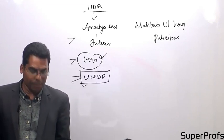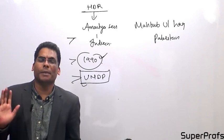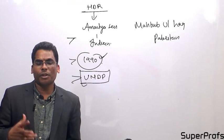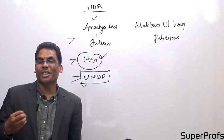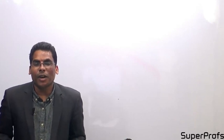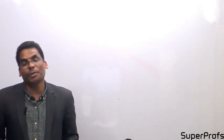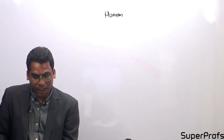The Human Development Report is launched by UNDP — United Nations Development Programme. The importance of this index is how you find out whether some country is developed, developing, or least developed. What method have you used to find out that a country is developing, and how do you bring in objectively a score in the Human Development Index?